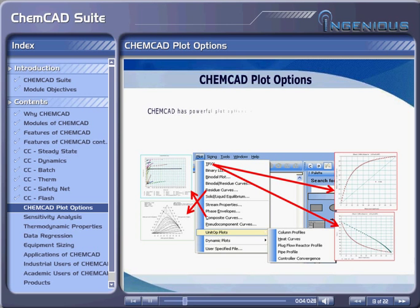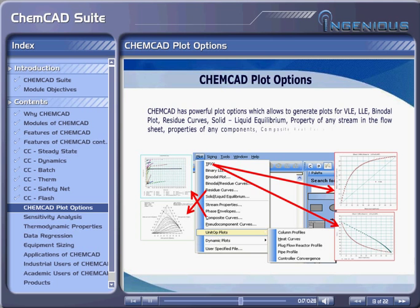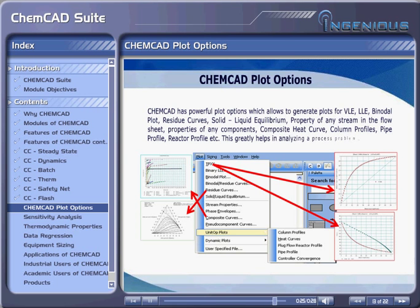ChemCAD has powerful plot options which allow generating plots for VLE, LLE, binodal plot, residue curves, solid-liquid equilibrium, property of any stream in the flow sheet, properties of any components, composite heat curve, column profiles, pipe profile, reactor profile, etc. This greatly helps in analyzing a process problem.